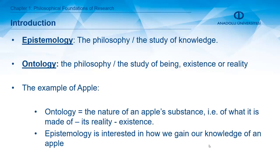Let's have a quick look at two important terms: epistemology and ontology. Epistemology focuses on the study of knowledge — it is called the philosophy of knowledge. Ontology, on the other hand, is interested in the existence and reality of items and beings. For example, ontology is interested in the nature of an apple: what it is, what it is made of, and what its existence is. Epistemology is interested in how we get the knowledge of an apple — how do we know that this is an apple.